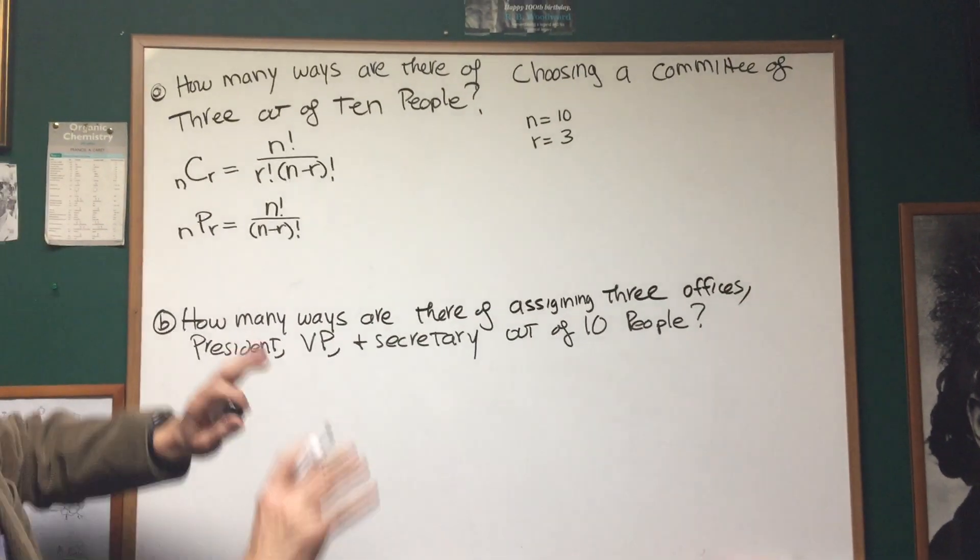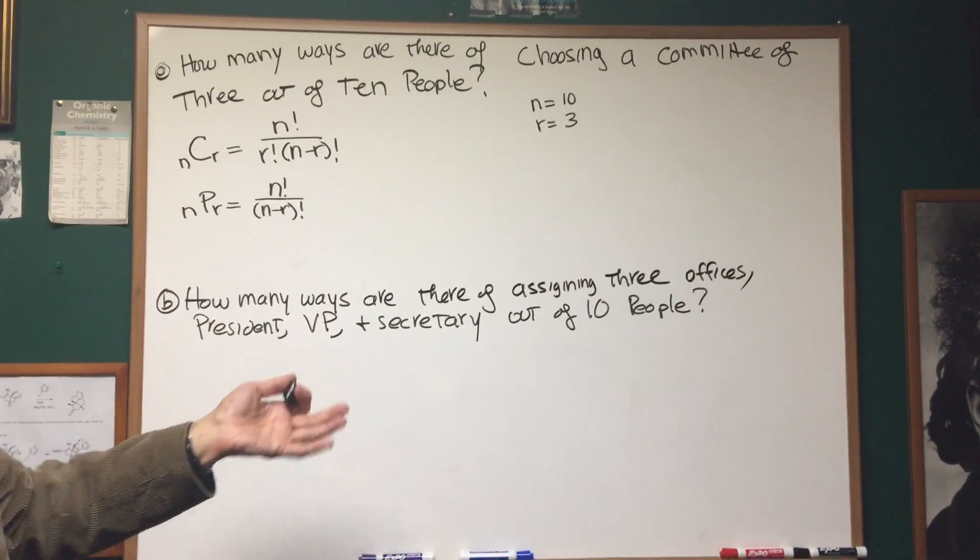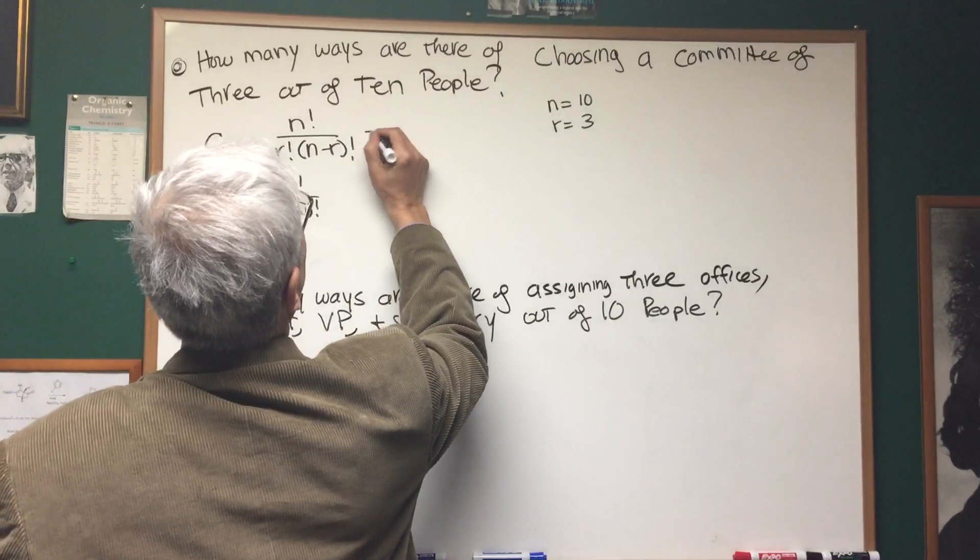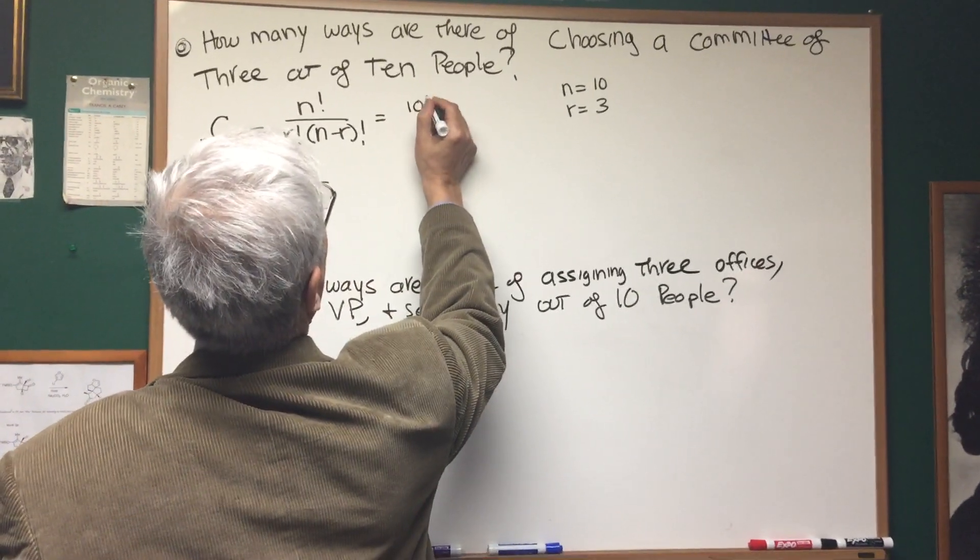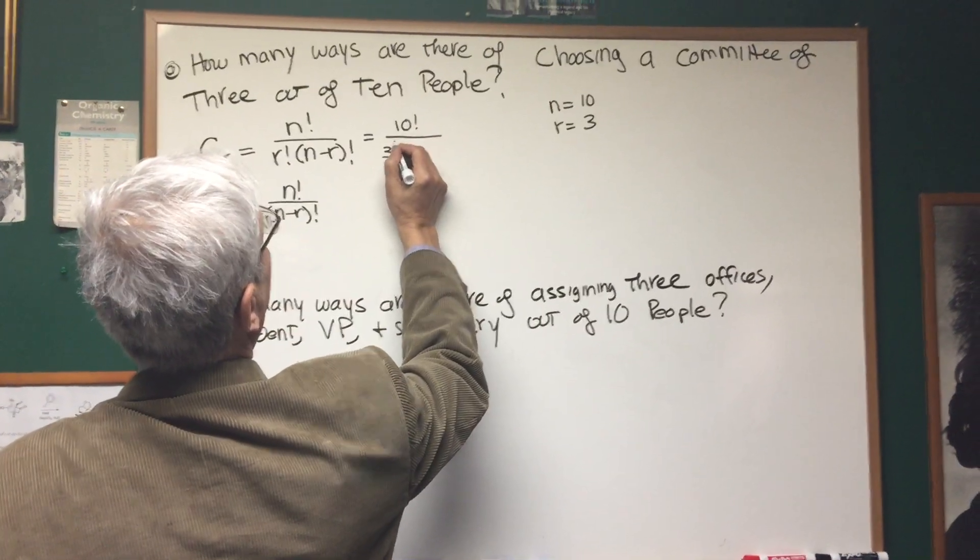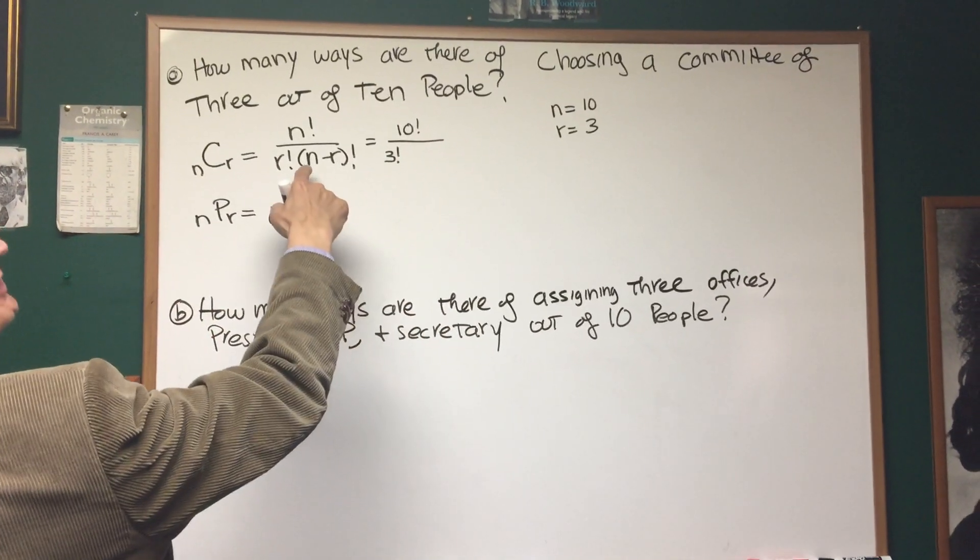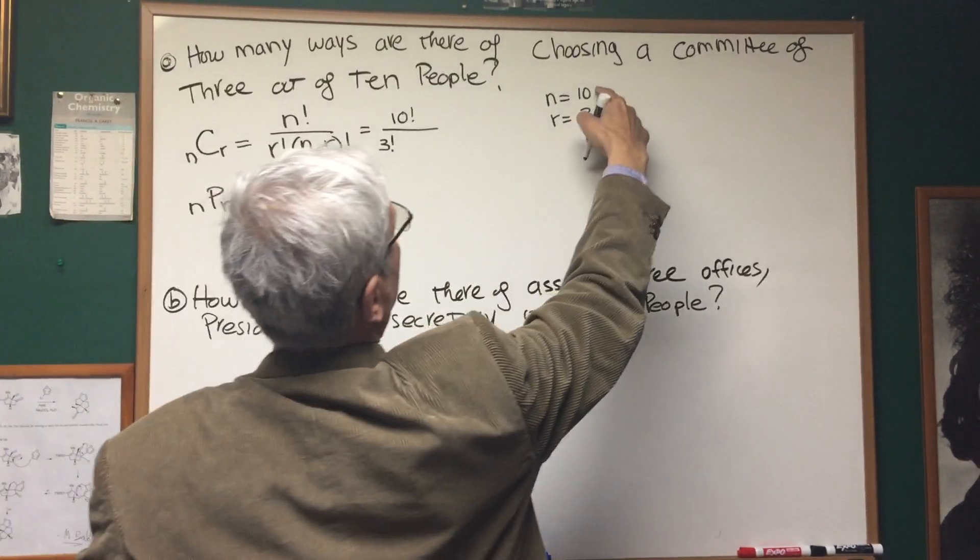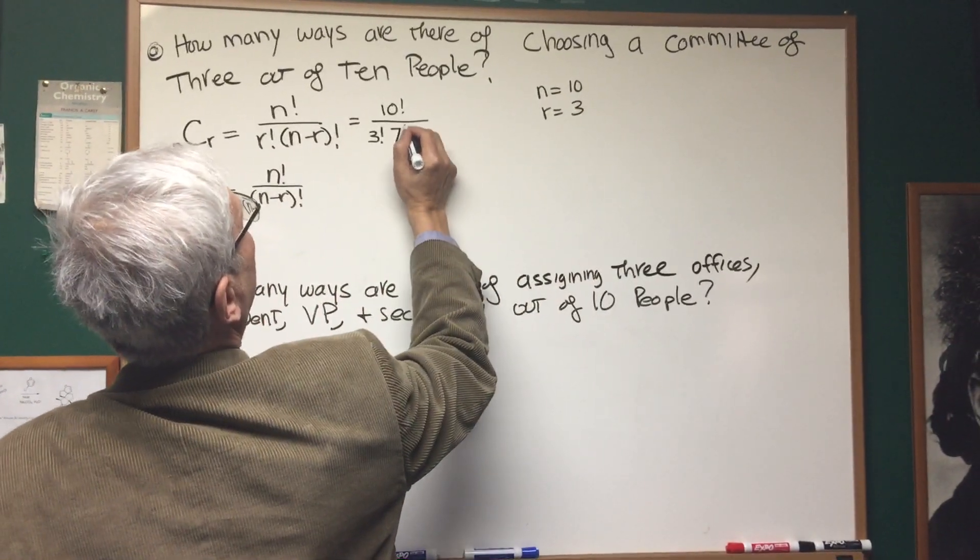Order doesn't count, it's a committee, three members of a committee, order doesn't count. So we're going to figure this out. It's going to be ten factorial divided by r factorial, which is three factorial, times n minus r factorial. Well, ten minus three is seven. Seven factorial.